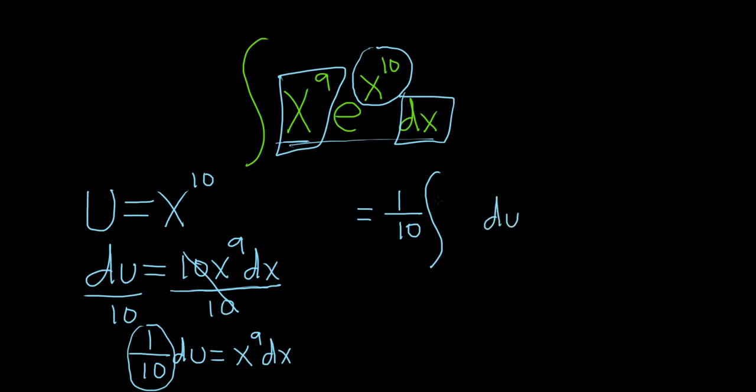At this point, I've only replaced the x to the ninth and the dx. So what's left is e to the u. The integral of e to the u is e to the u. So this is 1 tenth e to the u plus C.